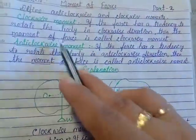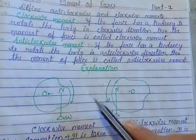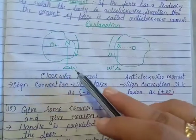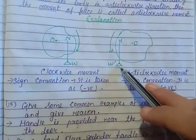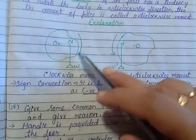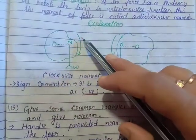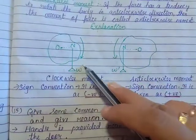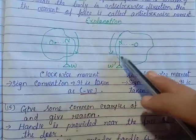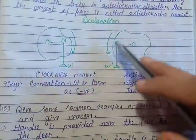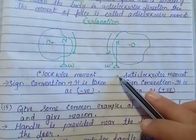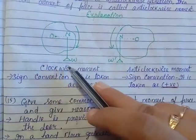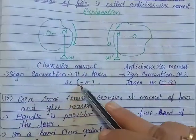Here we have two weights: W and W prime. W shows the clockwise moment — the force has the tendency to move in the clockwise direction. W prime shows the anticlockwise moment — it has the tendency to move in the anticlockwise direction. An important sign convention: whenever a moment is clockwise, the sign must be negative.